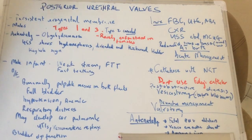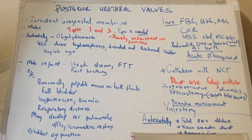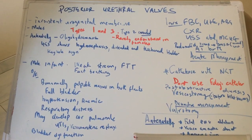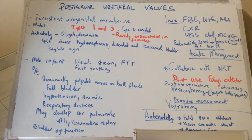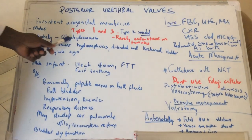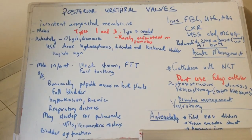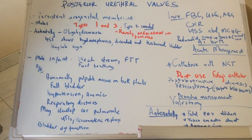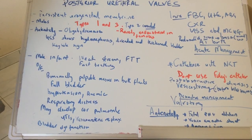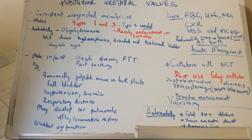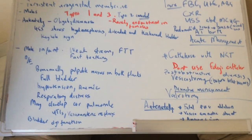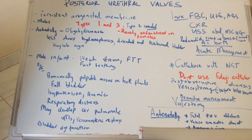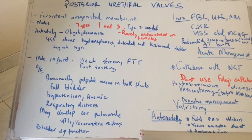The condition can be diagnosed antenatally or postnatally. Antenatally, if a scan is done, it may show oligohydramnios. What happens is that the posterior urethral valves block the flow of urine from the bladder to the urethra. Amniotic fluid is contributed from urine, so in the antenatal period, posterior urethral valves can cause oligohydramnios — meaning there will be low amniotic fluid.